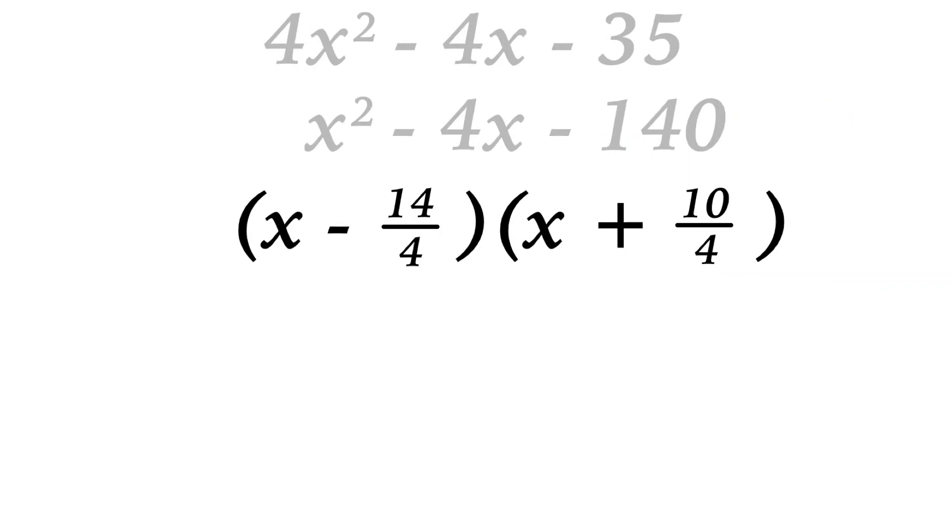At that point, we divide the 14 and the 10 by that leading coefficient of 4. Reducing those fractions, 14 over 4 reduces to 7 over 2, and 10 over 4 reduces to 5 over 2.